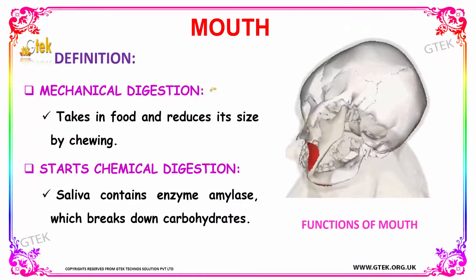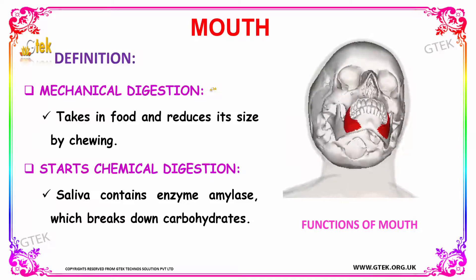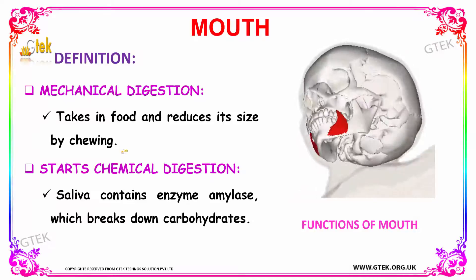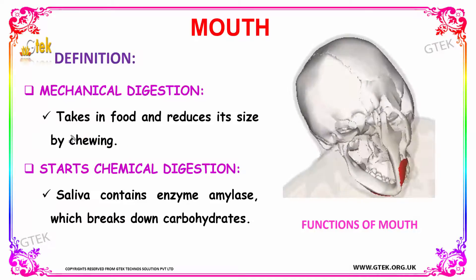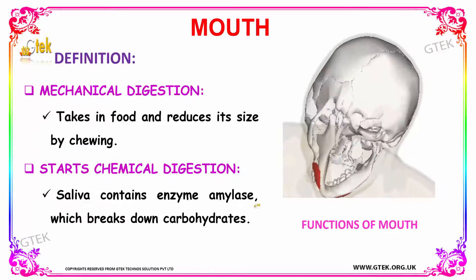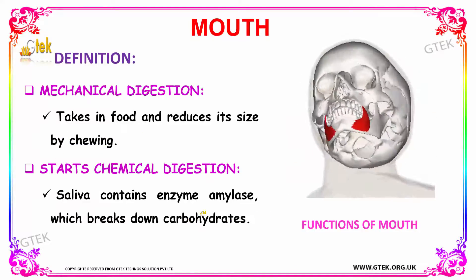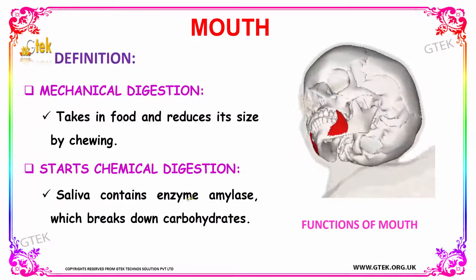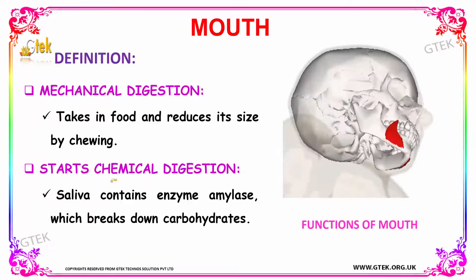Let us see how digestion is classified into mechanical digestion and chemical digestion. If a person takes in food and reduces the size of the food by chewing, then it is known as mechanical digestion. If digestion is done by an enzyme such as saliva, which contains the enzyme amylase, it breaks down the carbohydrates — that is known as chemical digestion.